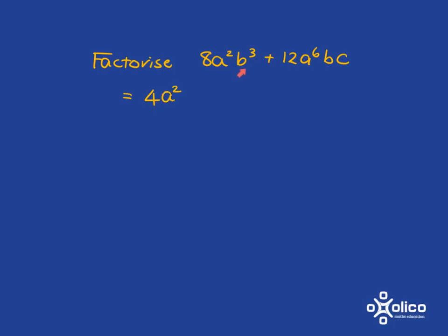Here you've got a b cubed and a b, so you're just going to have a b in the highest common factor. And then here you've got a c, but here you've got no c's, so you can't put any c's in the highest common factor because then it won't divide into this term.